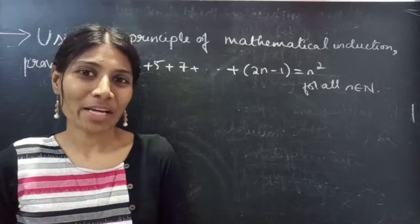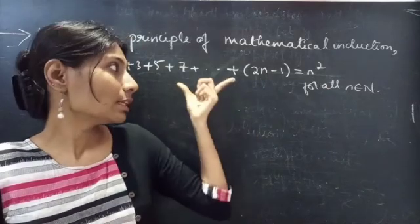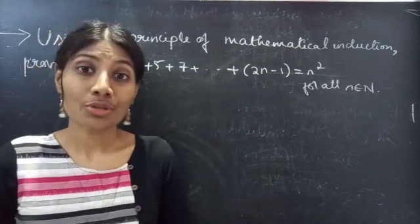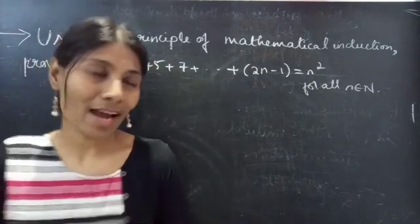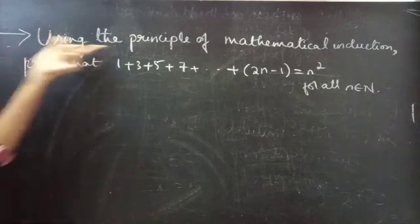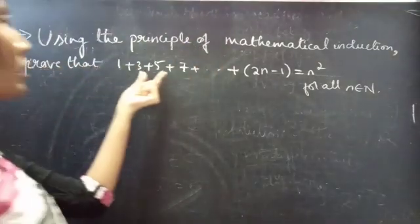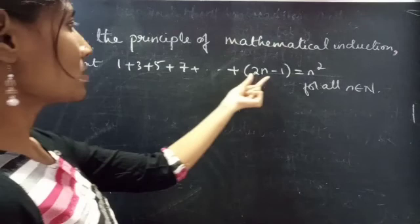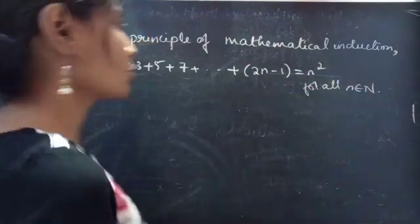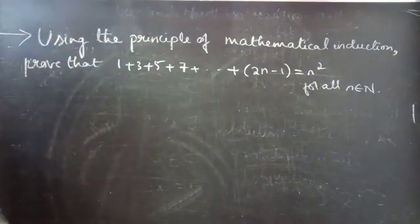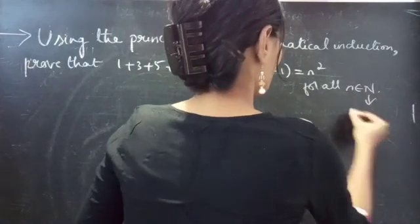Hello everyone, this is Yeh Karpana here. In this video, we are going to prove the statement using the principle of mathematical induction: 1 plus 3 plus 5 plus 7 plus so on plus 2n minus 1 equals to n squared, for all n belonging to natural numbers. So let's get started.